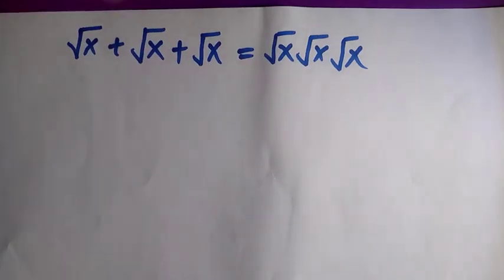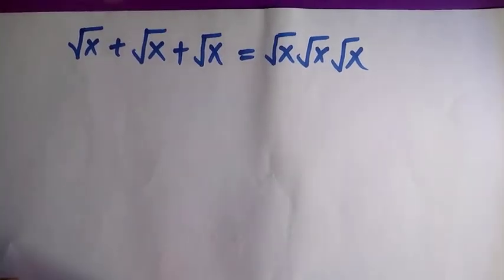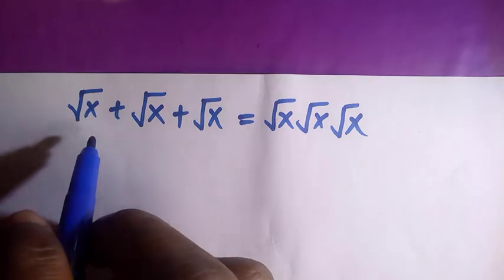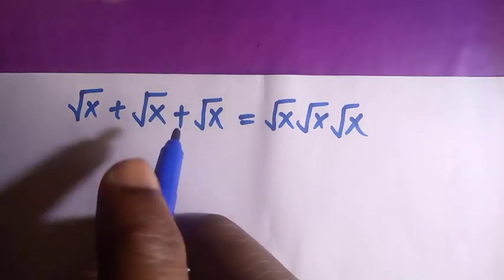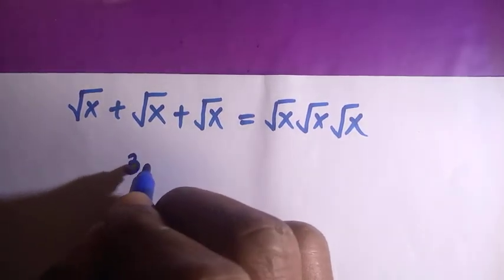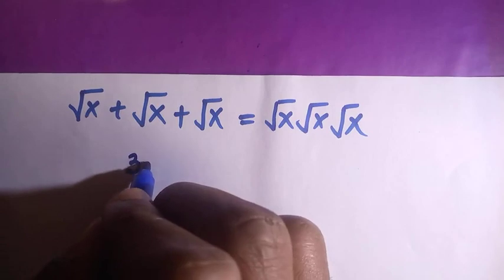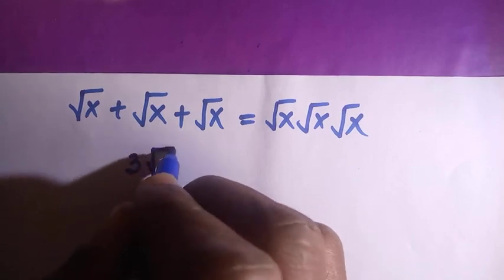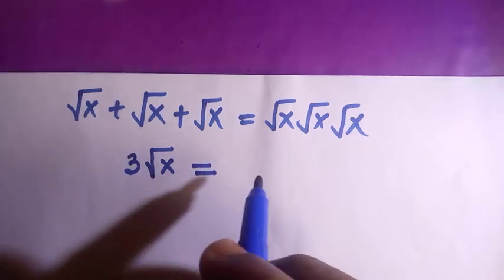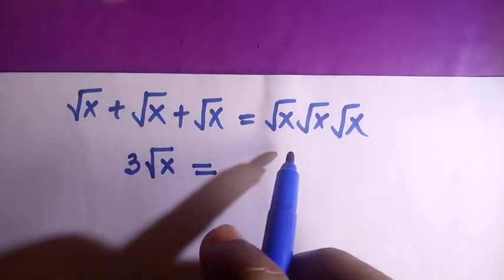Welcome to another video. Let's solve this radical problem — it's a trap, but let's see how to beat it. By adding all the left-hand terms together, it becomes 3√x equals 2... so we have √x multiplying √x multiplying √x on the right side.